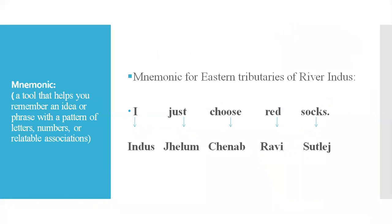Here is a mnemonic for the eastern tributaries of River Indus to help you learn their sequence. 'I Just Choose Red Sox' — I stands for Indus, Just for Jehlam, Choose for Chenab, Red for Ravi, Sox for Satlaj. A mnemonic is a tool that helps you remember an idea or phrase with a pattern of letters, numbers, or relatable associations.